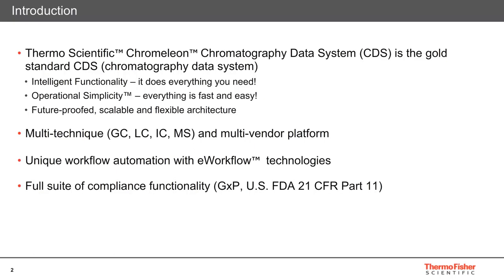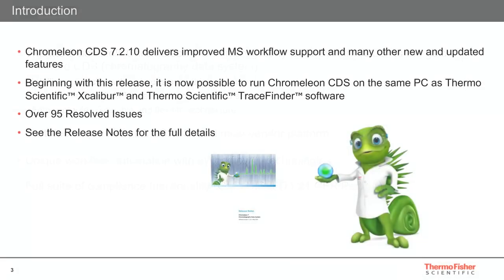Finally, a comprehensive suite of tools are provided to ensure full regulatory compliance, which can now be applied to your MS data as well. Chameleon CDS version 7.2.10 was released in May of 2019, and added a significant number of new and improved features, together with more instrument control drivers and the resolution of several issues. Centred on delivering improved MS workflows, it is also now possible to run Chameleon CDS on the same PC as Excalibur and TraceFinder software. For full details of all the new and updated features and resolved issues, please take a look at the release notes.